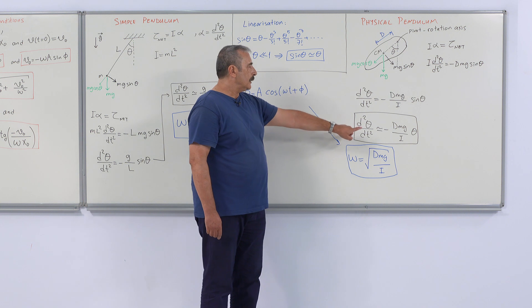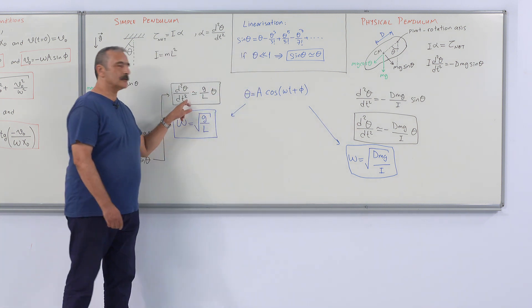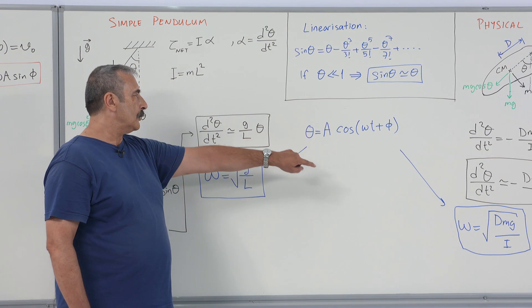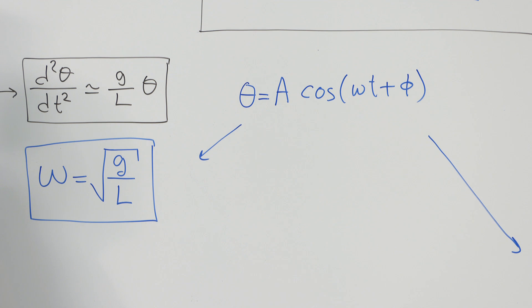Now, we have again two equations for simple harmonic motion. The solution to both equations is A times cosine omega t plus phi.